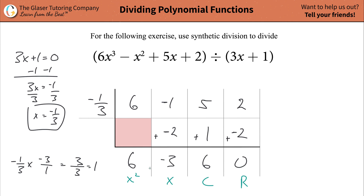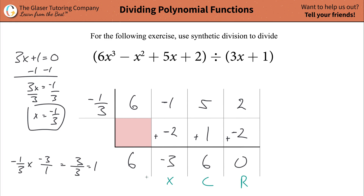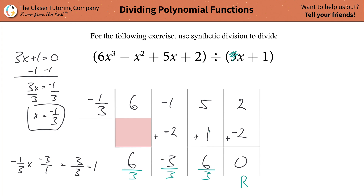Before you start writing out your quotient, you have to remember to do one important thing. Go back to your divisor and look at the coefficient of your x term. Whatever that value is, you're going to divide each of these bottom-row terms by it — but you do not divide the remainder. If the divisor were just x minus one, you'd still think about this step, but dividing by one doesn't change anything. In this particular case, we're dividing each of these by three.